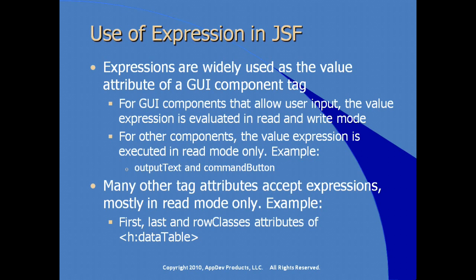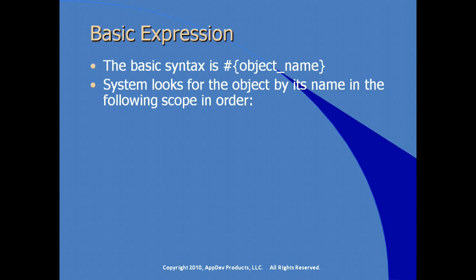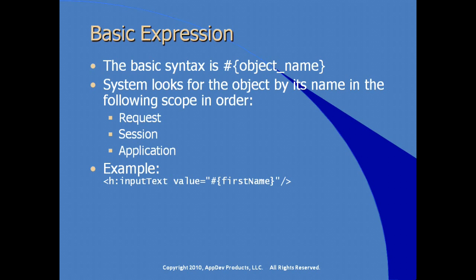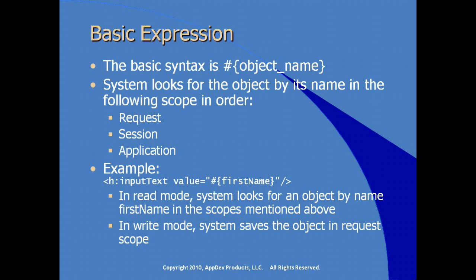For example, first, last, and rowClasses attributes of a JSF dataTable element. The basic syntax, with curly brackets preceded by the pound sign, uses the object name or instance name. The system looks for the object in the following scopes in order: first request scope, then session scope, then application scope. In write mode, the system saves the object in request scope as a request parameter.